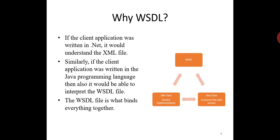If the client application was written in .NET, it would understand the XML file. Similarly, if the client application was written in Java, it would also be able to interpret the WSDL file. The WSDL file is what binds everything together. From the above diagram, you can see that you can create a web service in .NET — this is where the service gets implemented. Without the WSDL file, a Java class consuming the web service would require a lot of coding effort. But with the WSDL file, which is in XML and can be understood by any programming language, you can easily have a Java class consume the .NET web service. Hence, the amount of coding effort is greatly reduced.